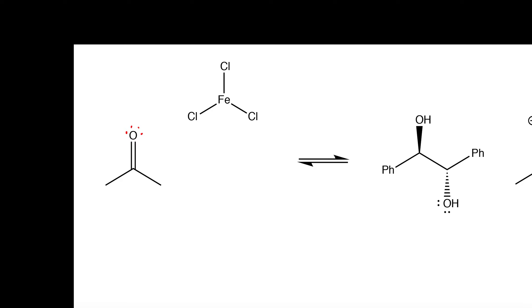We start off by reacting acetone with ferric chloride. Ferric chloride is a really good Lewis acid and the reason why it's a good Lewis acid is because it can accept lone pairs because this iron molecule has an empty p orbital.